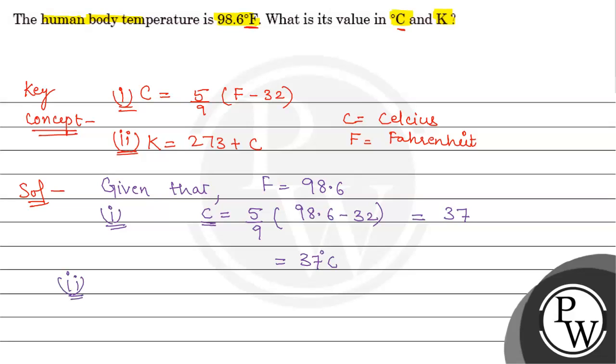Now we also have to find it in Kelvin. K = 273 + 37, which equals 310 Kelvin.